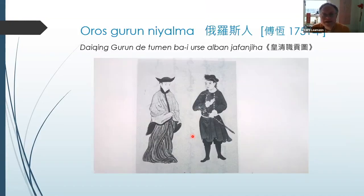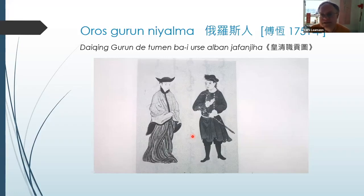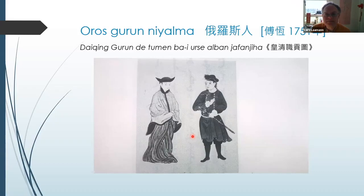This is from a book that you can find at SOAS as well — a book on the tributary nations and all the minority populations of the Qing, all the known populations in Asia and beyond — and beyond means usually Europe: those parts of Europe that sent traders. And the Russians — 'Oros.' Oros is the name for Russia in Manchu, and that's where the Chinese term for Russia comes from.